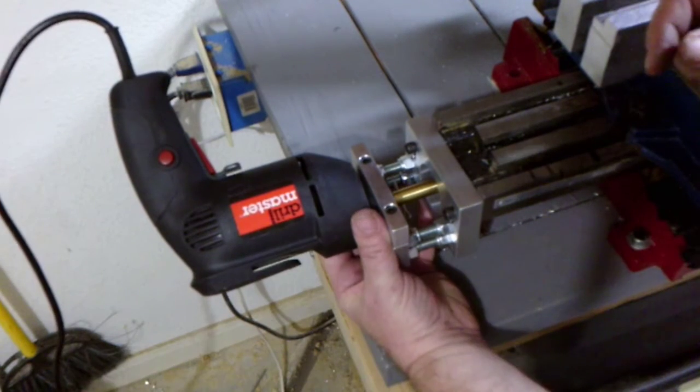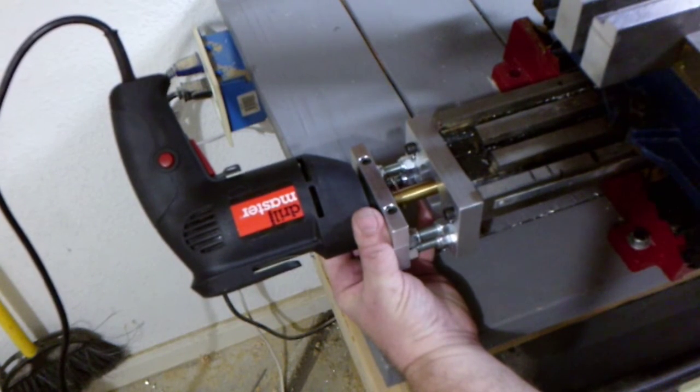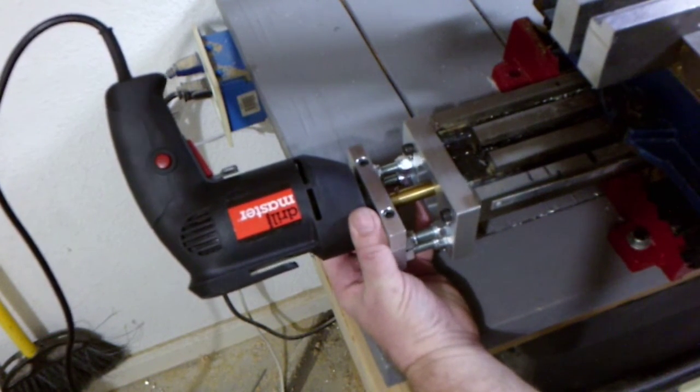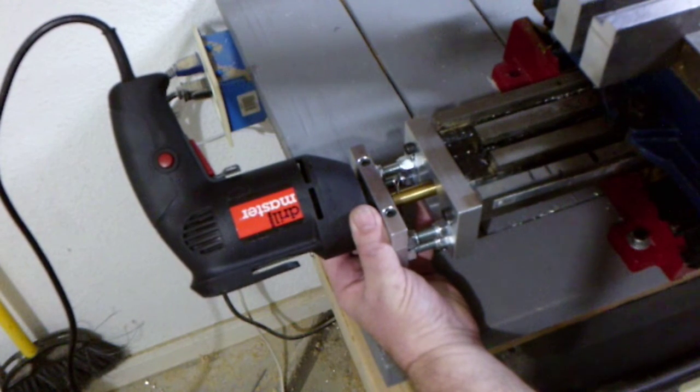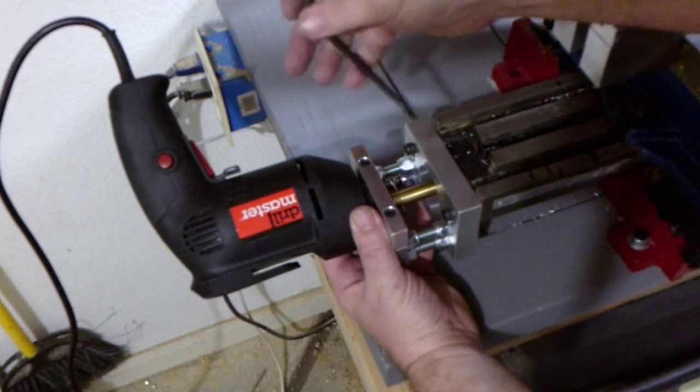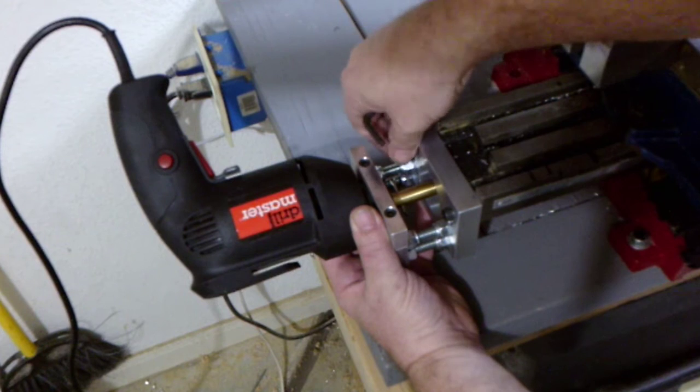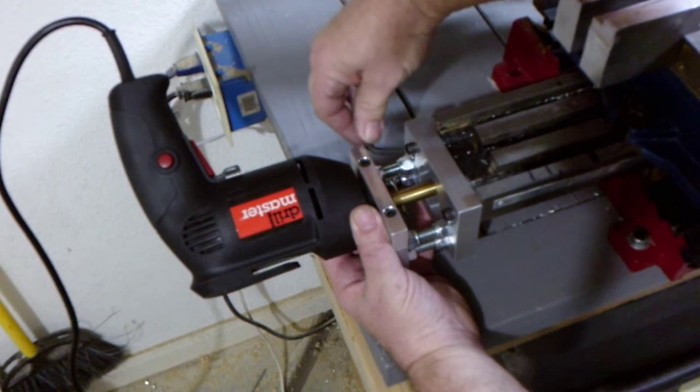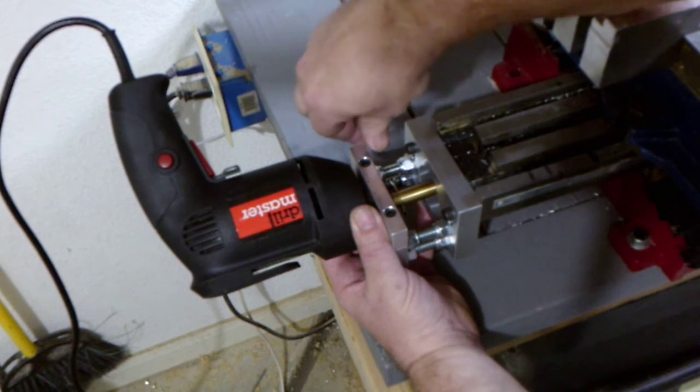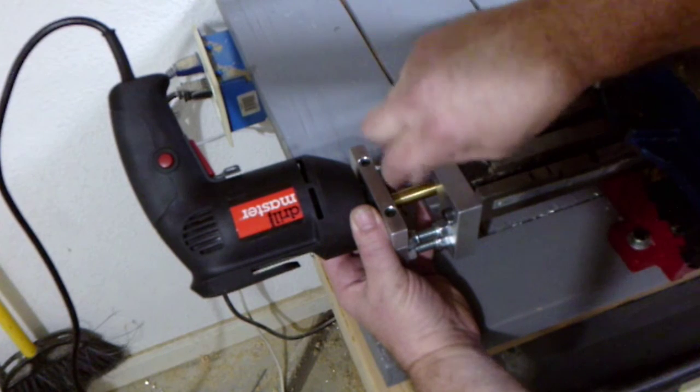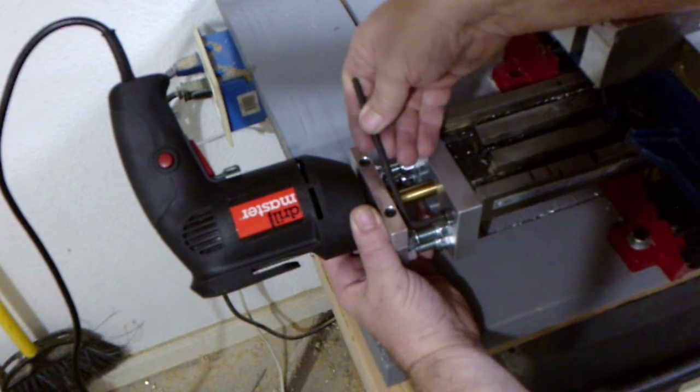Turning the feed handle on the right side of the bed will help align the power feed. When feed motion is smooth, tighten the screws and check for free motion again.